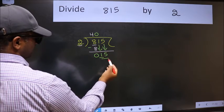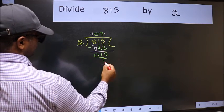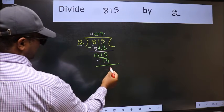Now 15. A number close to 15 in 2 table is 2 sevens 14. Now we should subtract. We get 1.